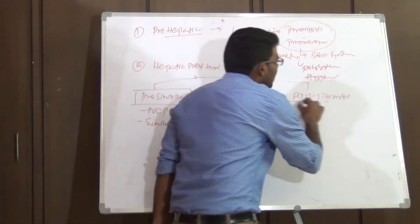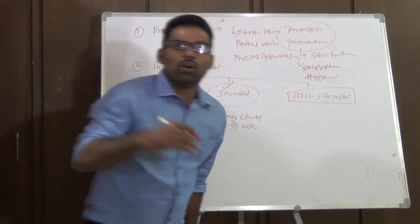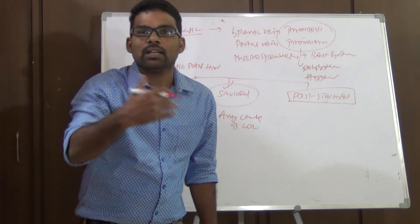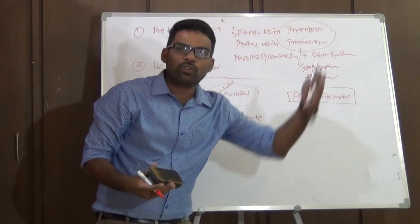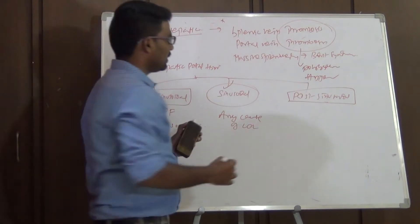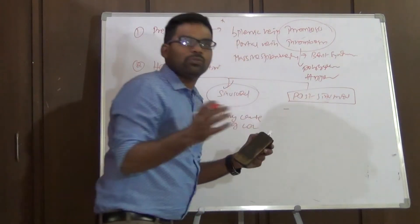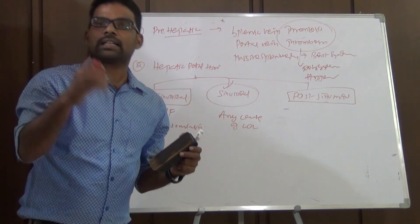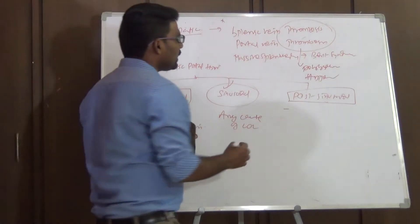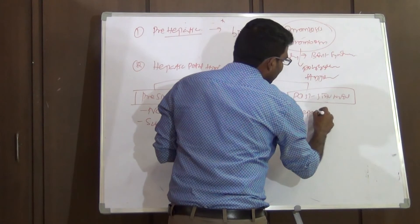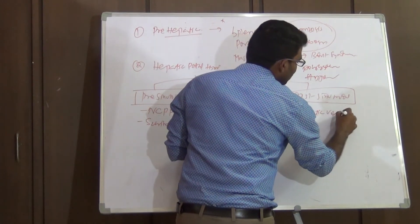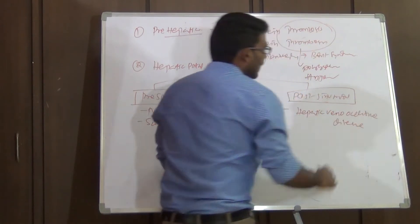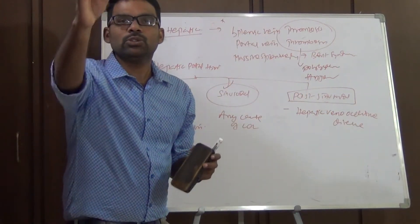The post-sinusoidal hepatic cause lies after the sinusoid and before entry into the inferior vena cava. This is due to hepatic venular obstruction — specifically, hepatic veno-occlusive disease, where the hepatic venules are obstructed.